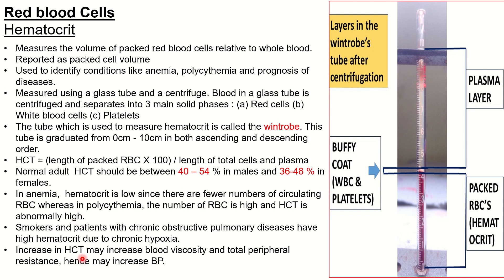An increase in hematocrit may increase blood viscosity — that is, blood thickness — since the amount of packed red blood cells will be high. This also increases total peripheral resistance and may therefore increase blood pressure. As there are more red blood cells flowing per unit volume, this can lead to increased blood pressure and may lead to stroke. Knowledge of hematocrit is therefore essential in blood physiology for the prognosis of disease.